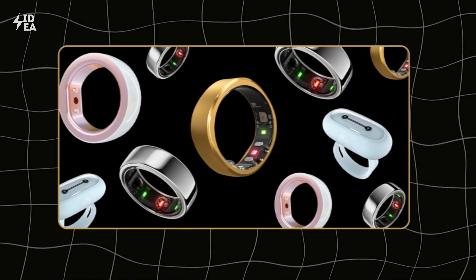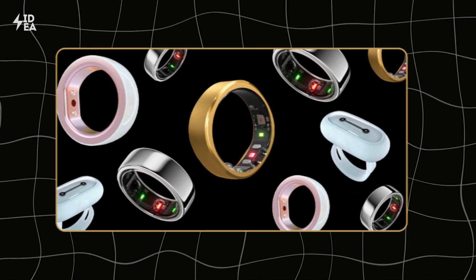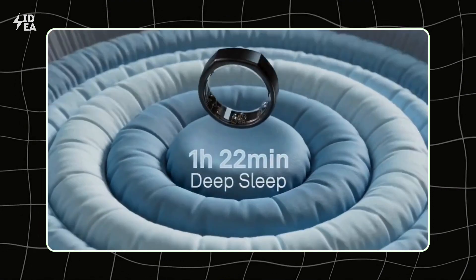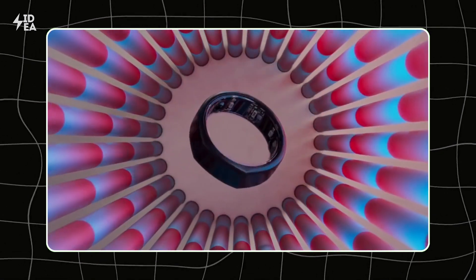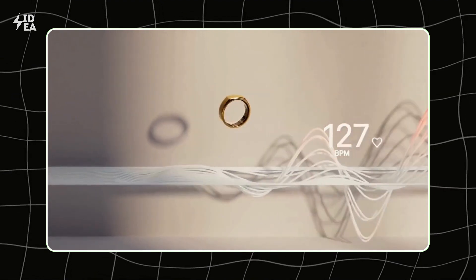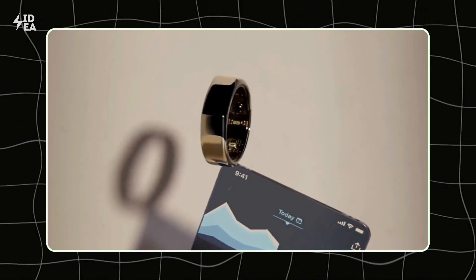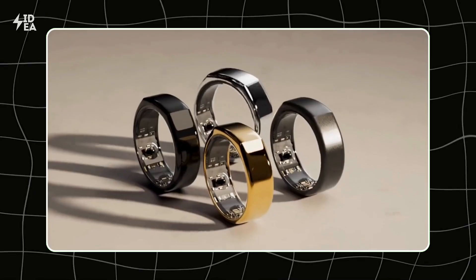Smart rings like the Galaxy Ring, Oura, and Amazfit Helio are fantastic tools for users looking to improve their health and daily performance. Whether you're a professional athlete or someone who cares about their overall health, these rings provide valuable information to help you understand your body better and make informed health decisions.